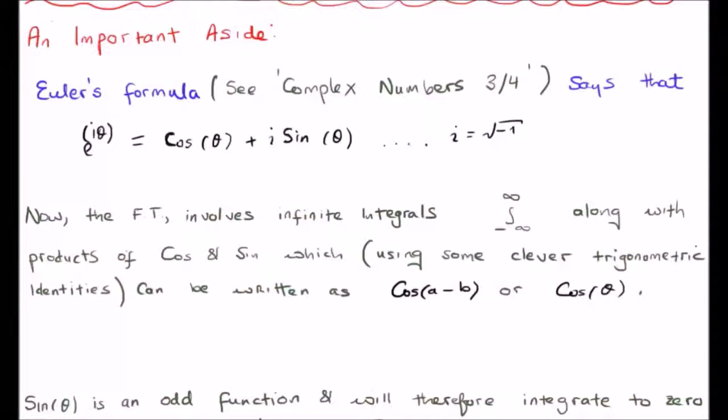added to two sines multiplied together, we can rewrite this as a single cosine of a minus b, let's say. Or, of course, we can equivalently say that's cosine of theta.